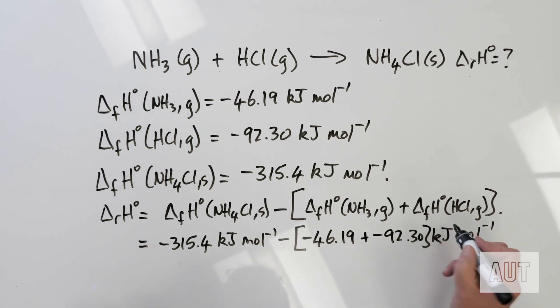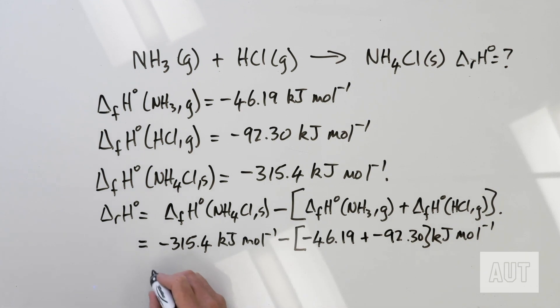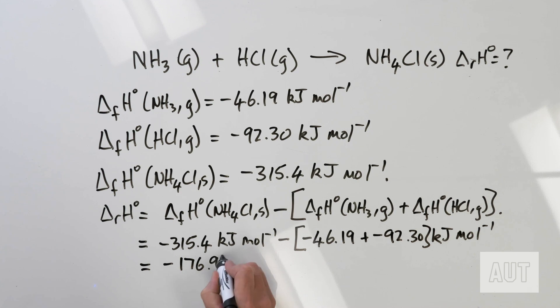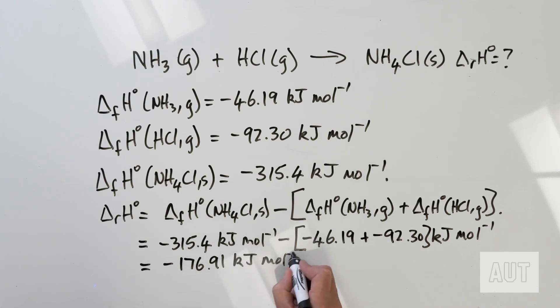You do the calculation and you end up with minus 176.91 kJ per mole — a relatively straightforward calculation.